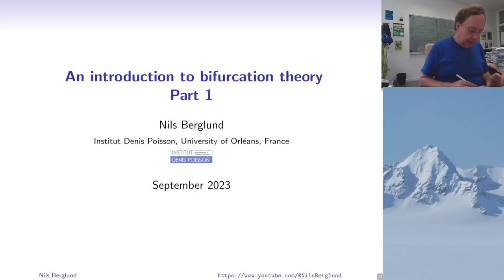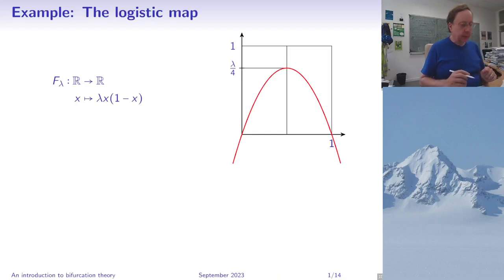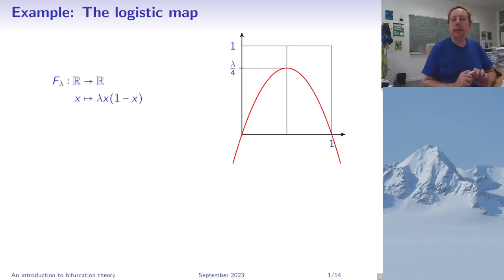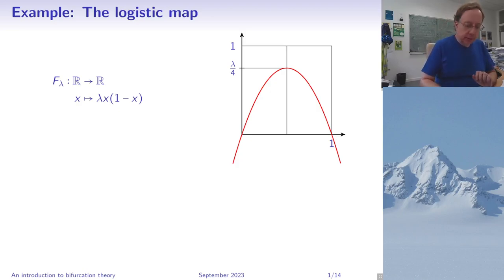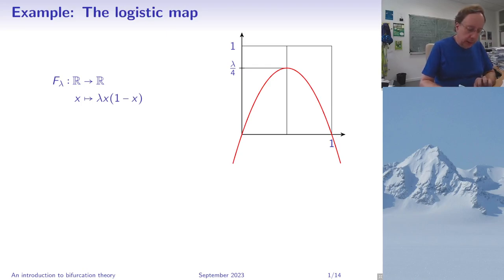So what is this about? Let me start with an example, which is the so-called logistic map. I have a map defined on the real axis, where x is mapped to λ times x times (1 minus x), and λ here is a parameter — it could be any positive real number. Here you have the plot of the graph: it is 0 at 0 and 1, its maximal value is reached at 1/2, and it has the value λ/4.